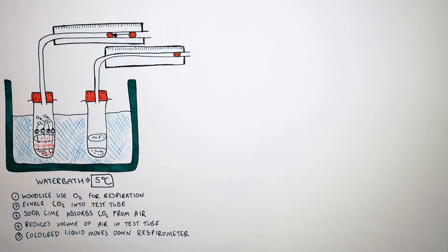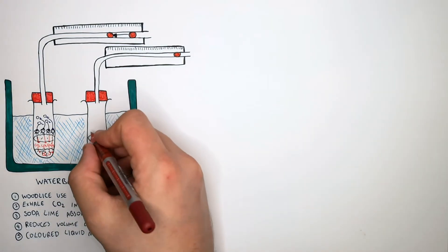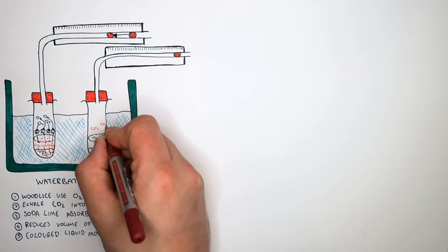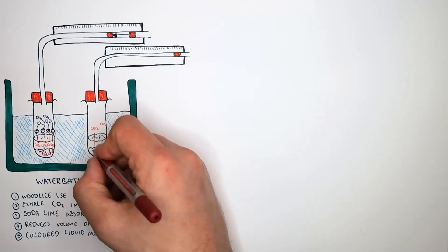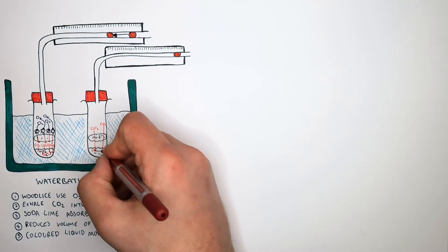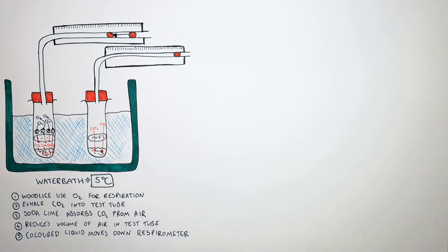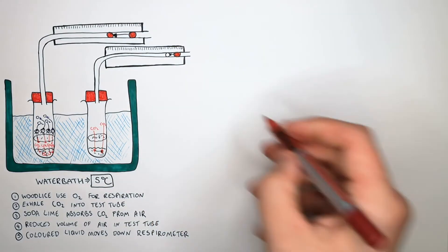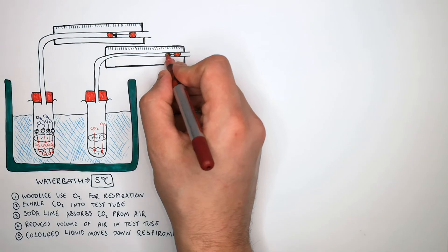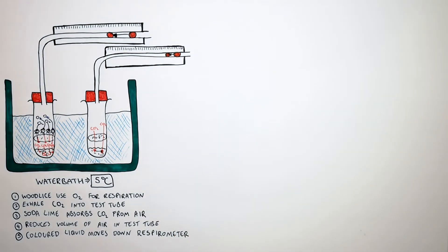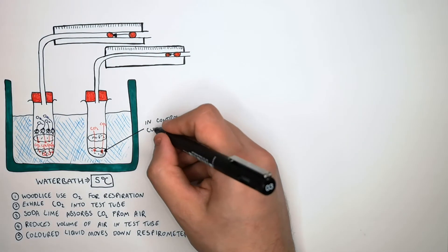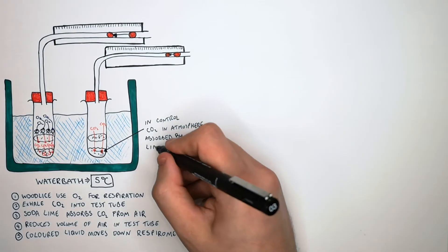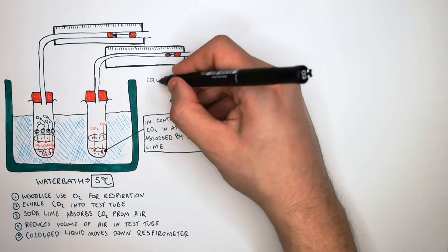We use the control to increase the validity of our results. The respirometer in the control will move a little, because there is CO2 in atmospheric air. Therefore, the soda lime in the control test tube is going to absorb the CO2 from the atmosphere, causing a pressure change and making the coloured liquid in the respirometer move — but nowhere near as much as in the test tube of the respiring organisms.